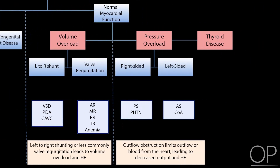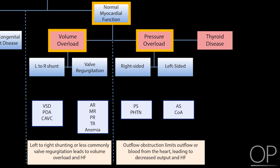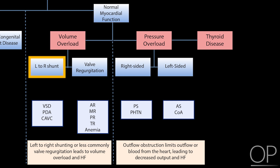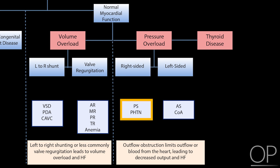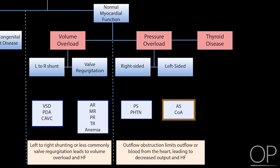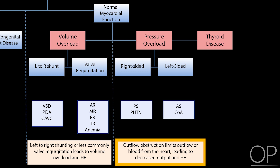Heart failure can also result from increased volume or pressure with normal myocardial function. Examples of volume overload include left-to-right shunting lesions such as a VSD, PDA, or complete AV canal defect, or valve regurgitation lesions. Volume overload increases the amount of work the heart has to do and leads to heart failure over time. Pressure overload lesions include right-sided lesions such as pulmonary stenosis or pulmonary hypertension, or left-sided lesions such as aortic stenosis or coarctation, where outflow tract obstruction limits cardiac output.